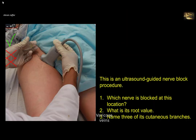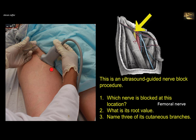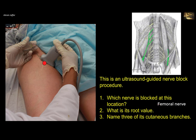This is an ultrasound-guided nerve block procedure. Which nerve is blocked at this location? You can see the ultrasound probe is located below the inguinal ligament in the femoral triangle, and the important nerve here is the femoral nerve — so they are trying to block the femoral nerve. It is better to have this block guided by ultrasound; otherwise, you can feel the pulsations of the femoral artery, and if you go lateral to the pulsations you will meet the nerve. If you go medial, it is the vein. Remember the VAN arrangement medial to lateral: vein, artery, and nerve. What is the root value of this nerve? The femoral nerve is a branch of the lumbar plexus, and its root value is L2, 3, and 4.